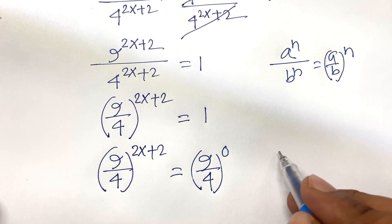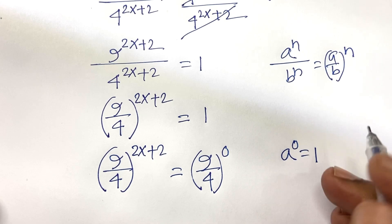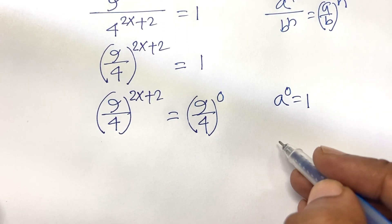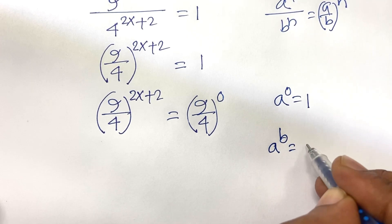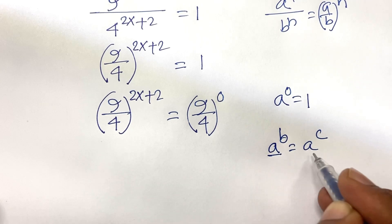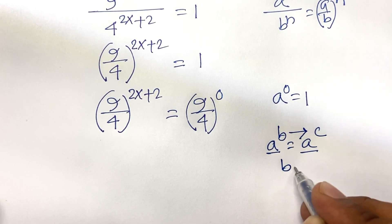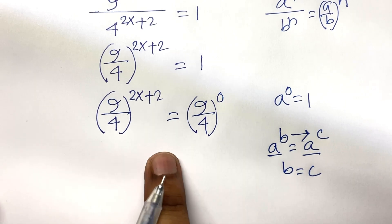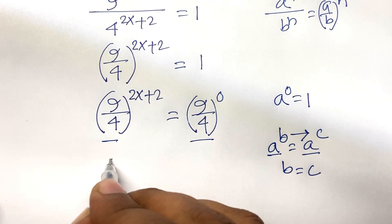Because we know that a to the power 0 equals 1, we can rewrite the right side as 9 over 4 to the power 0. Now, according to exponential rules, if a to the power b equals a to the power c, and the base is the same, then b equals c. I follow this rule here — the base is the same, so the powers must be equal.